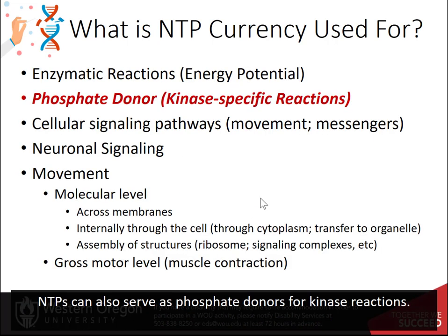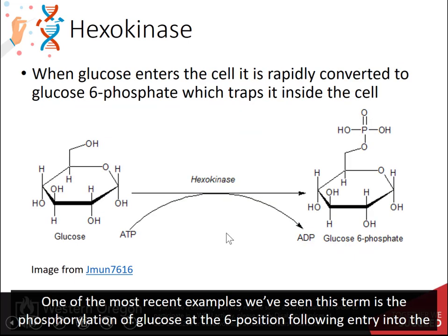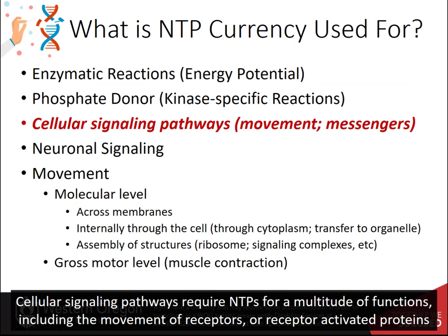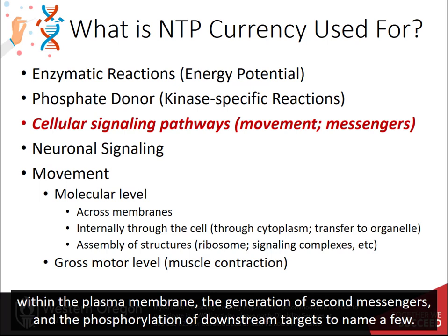NTPs can also serve as phosphate donors for kinase reactions. One of the most recent examples we've seen this term is the phosphorylation of glucose at the sixth position following entry into the cell. This is mediated by the hexokinase enzyme. Cellular signaling pathways require NTPs for a multitude of functions, including the movement of receptors or receptor-activated proteins within the plasma membrane, the generation of second messengers, and the phosphorylation of downstream targets, to name a few.